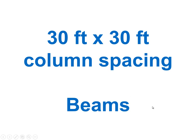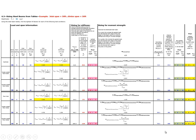We also sized wide flange beams for both the 30-foot by 30-foot column spacing as a worked example, and students sized the 40-foot by 40-foot spacing as an assignment. The spreadsheet shows roof joist, single-loaded roof girder, double-loaded roof girder, floor joist, single-loaded floor girder, and double-loaded floor girder. We did load pre-processing, then sized for stiffness and for moment strength, picking the larger of the two resulting members.